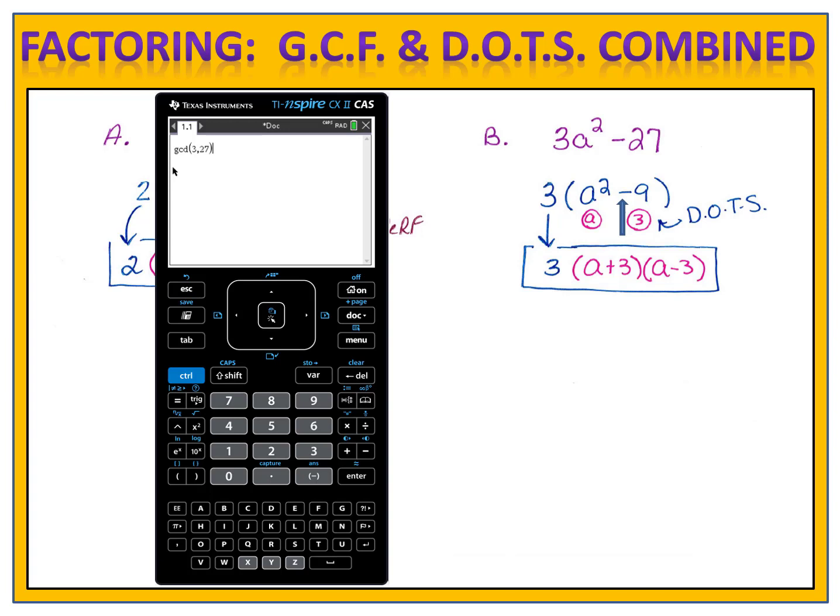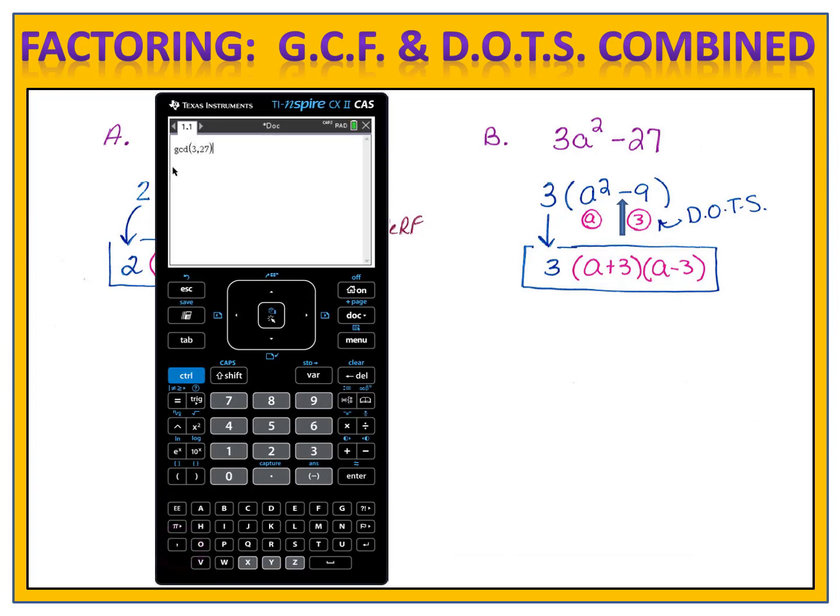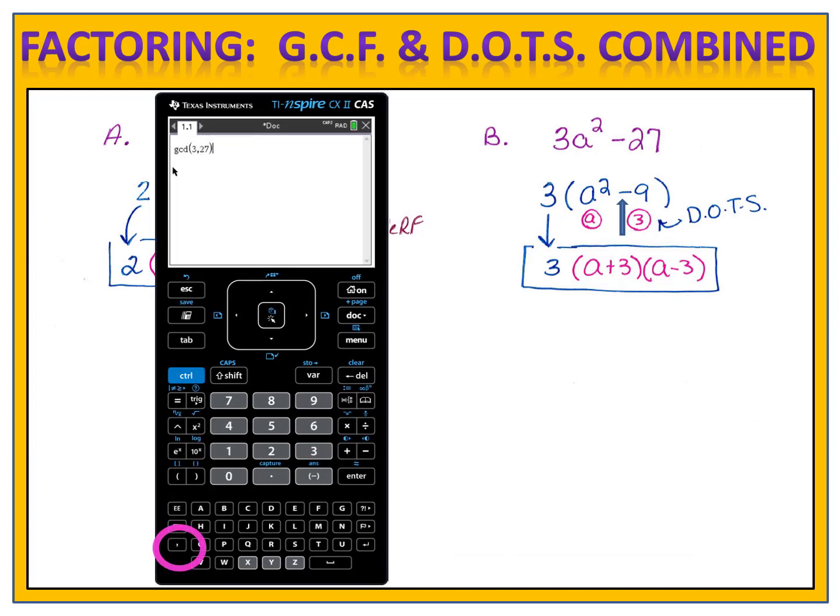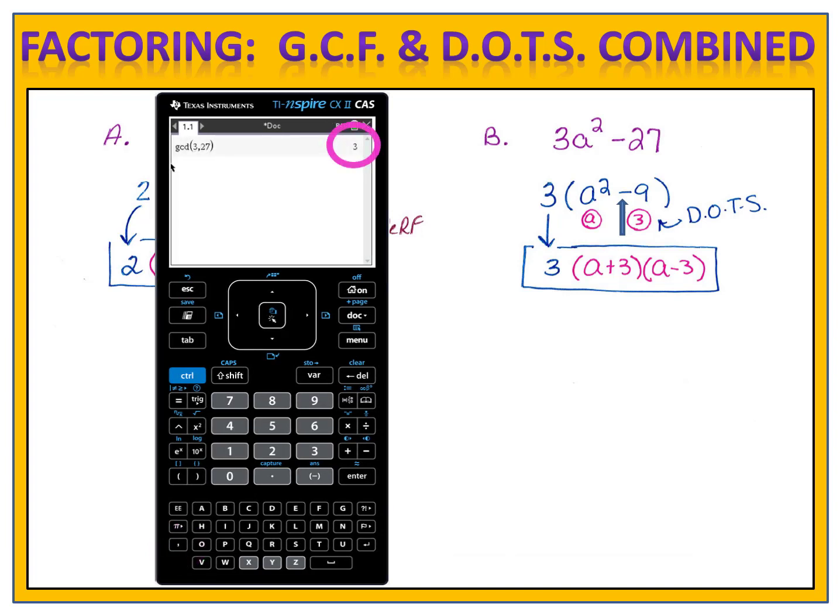In this case, 3 comma 27. If you can't find the comma key, it's down at the bottom next to the letter O. And when you hit enter, the calculator will tell you the greatest common factor of those two numbers. As we see here, the greatest common factor of 3 and 27 is the number 3.